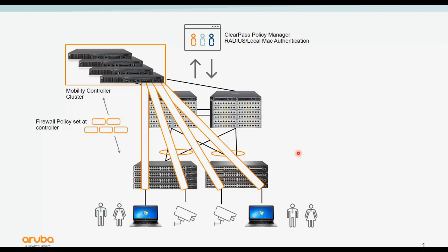Previously these features were called per-port tunnel node and per-user tunnel node. Now they've been renamed port-based tunneling and user-based tunneling. With port-based tunneling, everything on a port is statically tunneled back to an Aruba controller. With role-based tunneling, the tunnel is based upon the user's role — employees, contractors, or guests — tunneled according to their user role with specific policy from either the switch or downloaded from ClearPass.